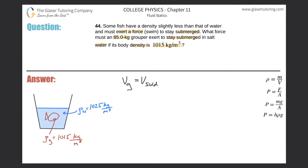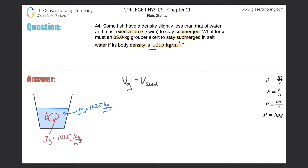Now let's expand on these volumes. Since we're given densities and masses, we want to relate volume to density and mass. Using the equation density = mass / volume, we can solve for volume and substitute into our equation.